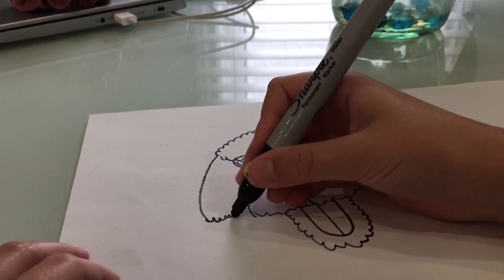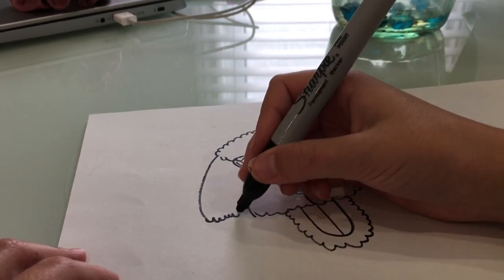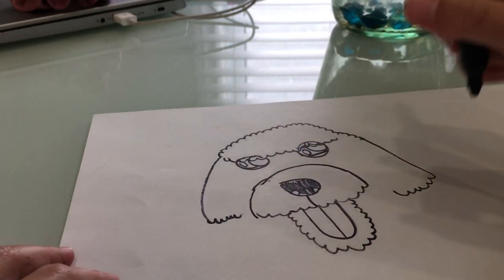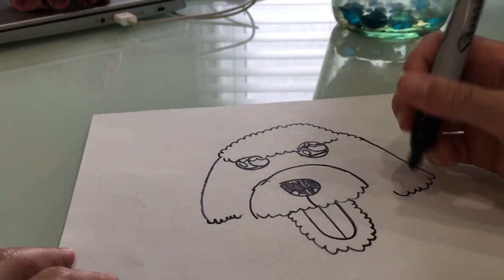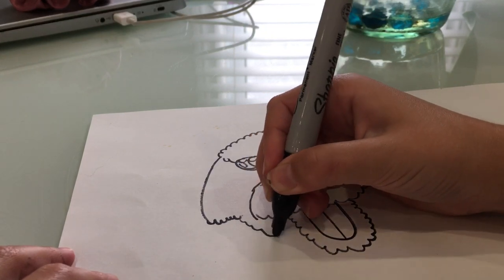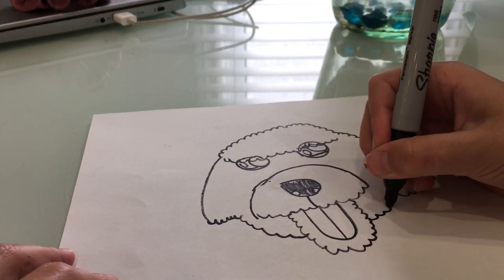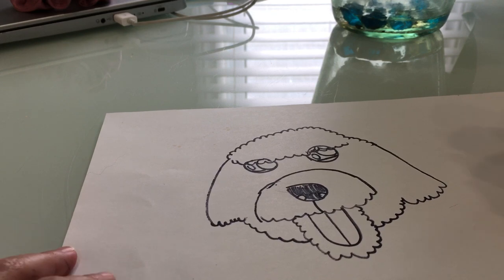Now, you need to connect the ears to the tongue with another cloudy line. So, it makes his head. There you have Luca's head.